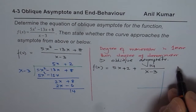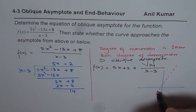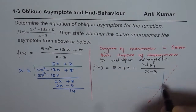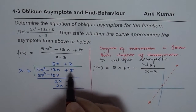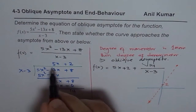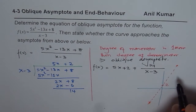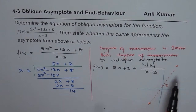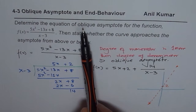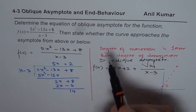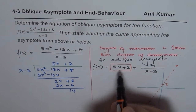The oblique asymptote has a y-intercept of 2 and a slope of 5. That is the first part — we have found the equation of the oblique asymptote: y = 5x plus 2.